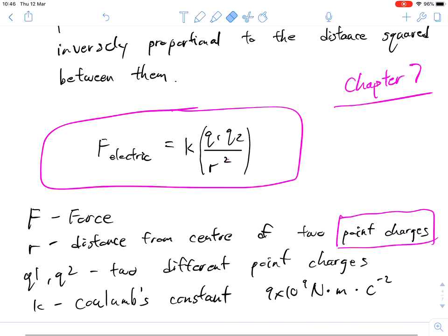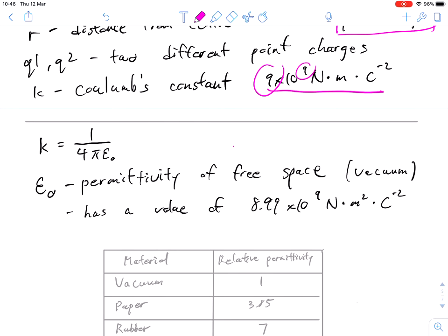So Q1, Q2 are two different point charges. We don't care how big an object is. We might have a massive table. We just say at the center of the table, it has this particular charge. Coulomb's constant, we're going to get into this right away. It is a constant number, 9 times 10 to the power of 9. Easy to remember, two 9s there. Pretty large number as well.